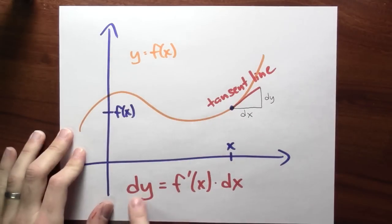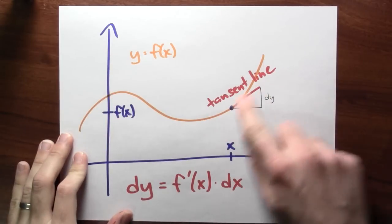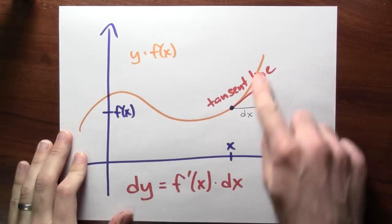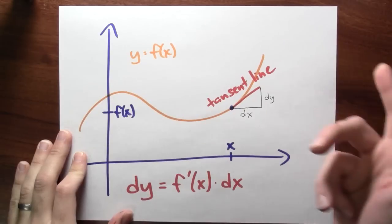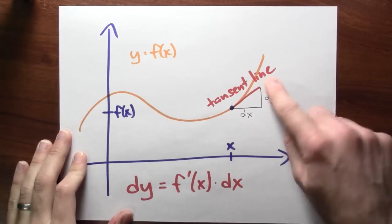Geometrically, these differentials, so dy and dx, represent some change in the linear approximation that I get using the tangent line. So here I've got some function that I've graphed, y equals f of x. And here's a point x, f of x. And I've drawn the tangent line to the curve there.